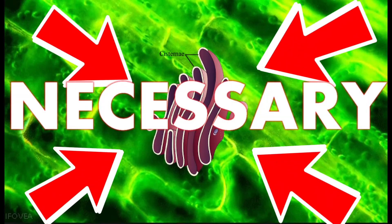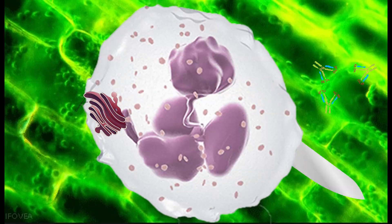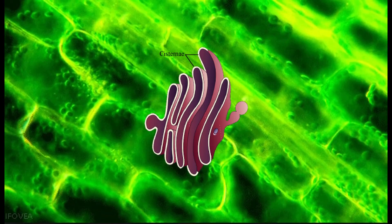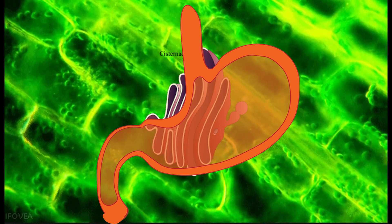I believe that the Golgi body is completely necessary because it secretes antibodies which are vital for homeostasis. It also uses proteins to create lysosomes which help with digestion, and if they didn't create lysosomes, humans wouldn't have enough energy to function and would spend it all on just digesting.